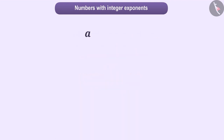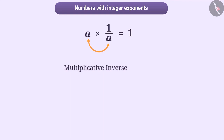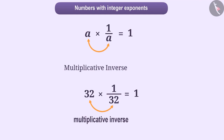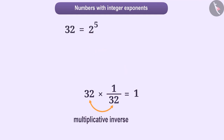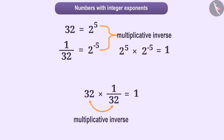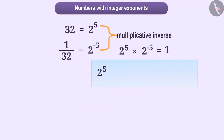Do you remember that the product of a number A and the number 1 upon A is 1? So we refer to A and 1 upon A as multiplicative inverses. For example, if we talk about the numbers 32 and 1 upon 32, their product is 1. So they are multiplicative inverses of each other. Now, as you know, we can write 32 as 2 to the power 5 and 1 upon 32 as 2 to the power minus 5. With this, we can also call 2 to the power 5 and 2 to the power minus 5 as multiplicative inverses of each other. With this understanding, we can express 2 to the power 5 as 1 upon 2 to the power minus 5 and 2 to the power minus 5 as 1 upon 2 to the power 5.